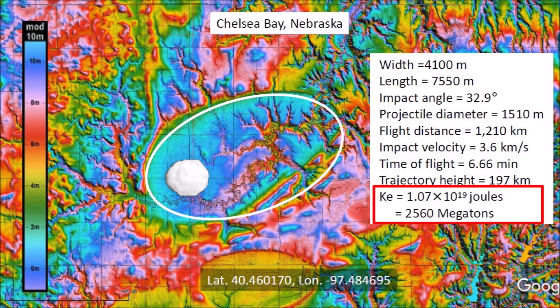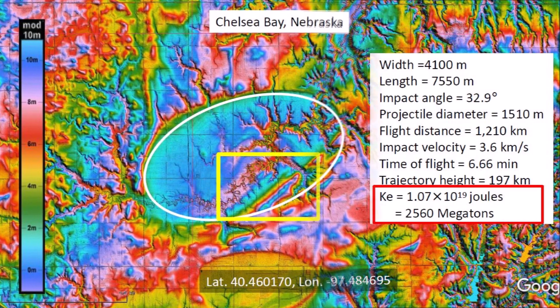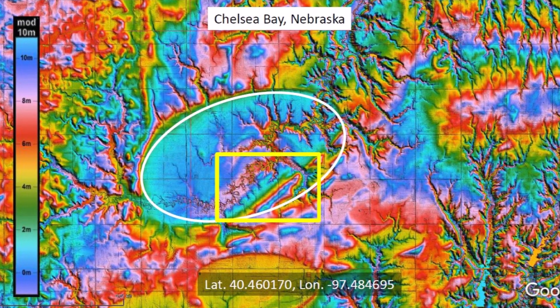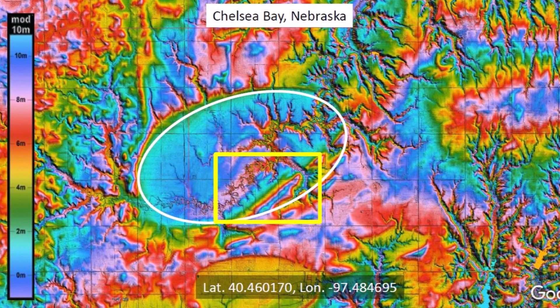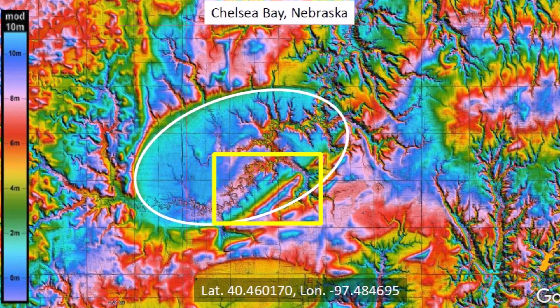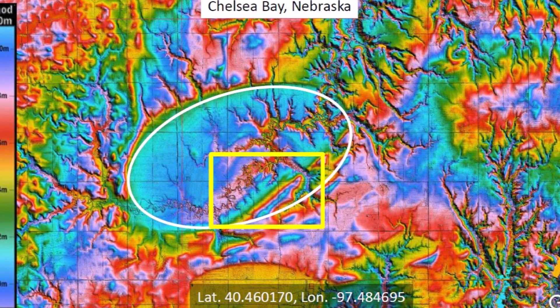The kinetic energy of such an impact is 2,560 megatons of TNT — that is absolutely incredible. I had to widen the columns of the spreadsheet I used for my calculations because the numbers were so large. It would have been impossible to survive the horrific ballistic sedimentation in Nebraska.